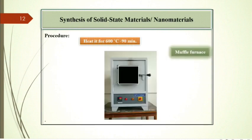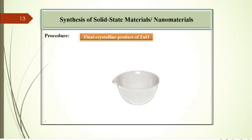After that, remove the crucible. This will form final product that is crystalline zinc oxide.